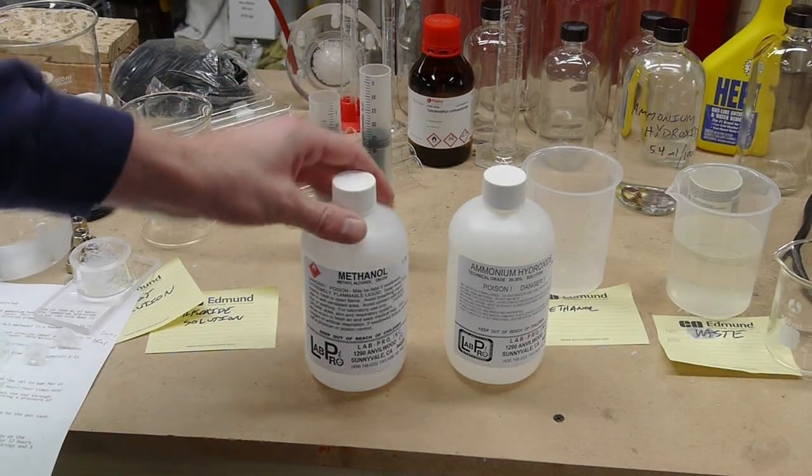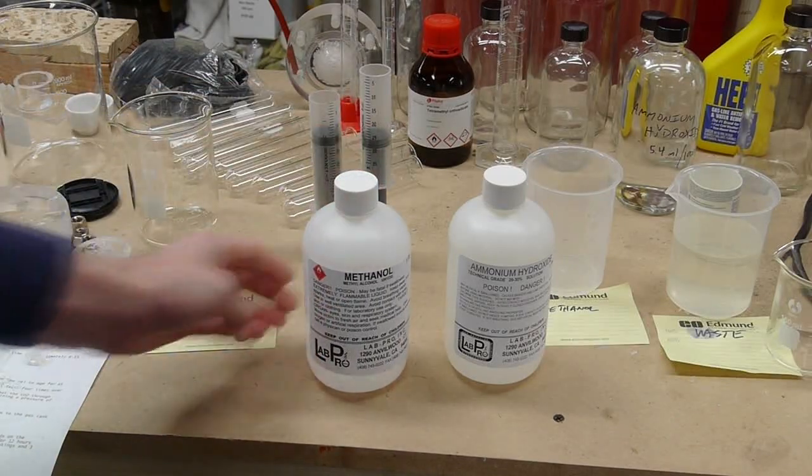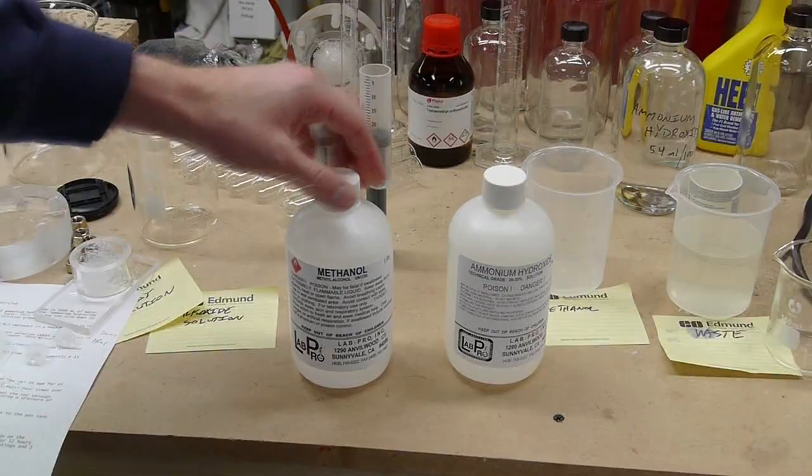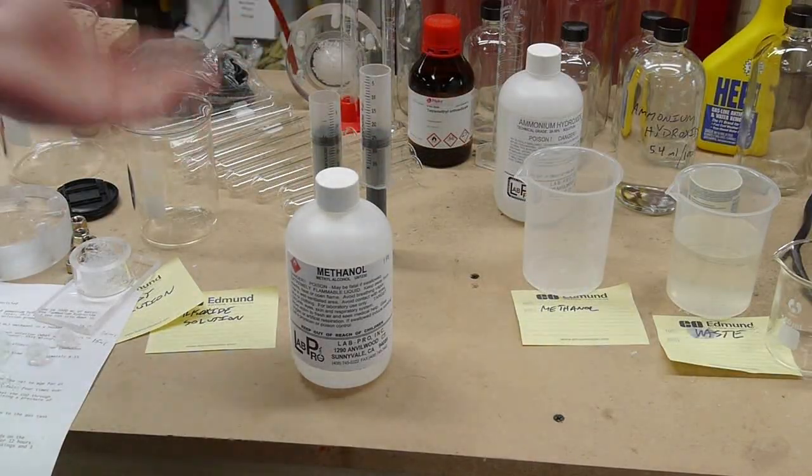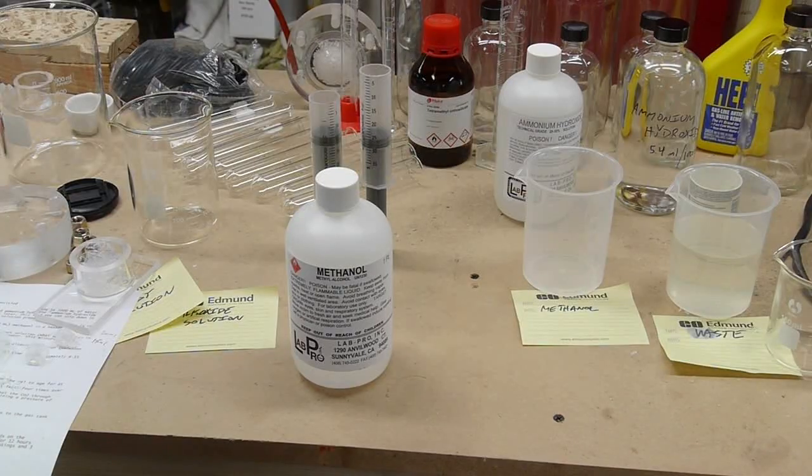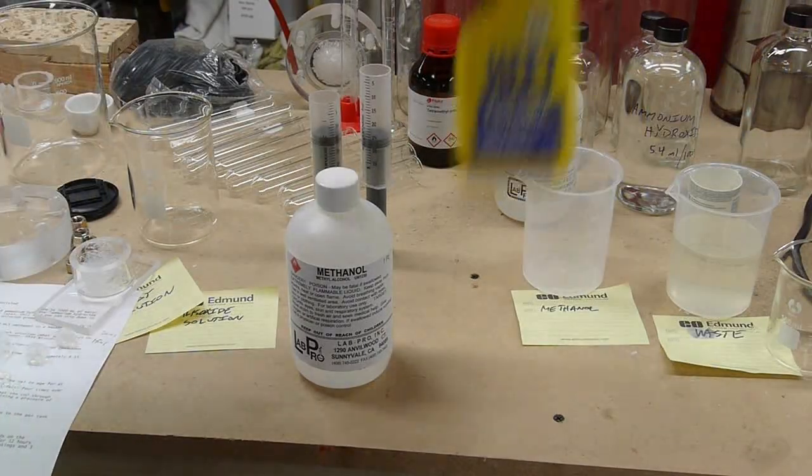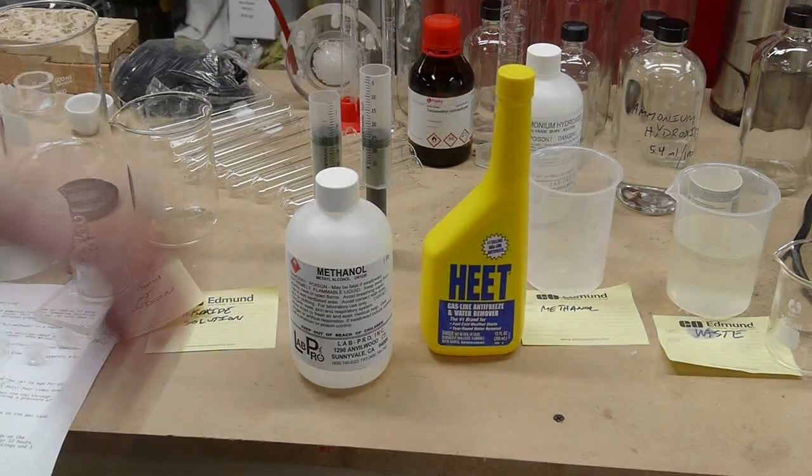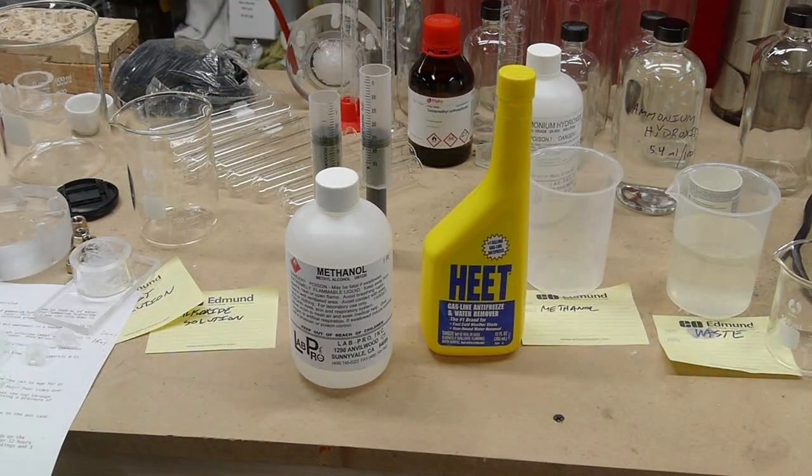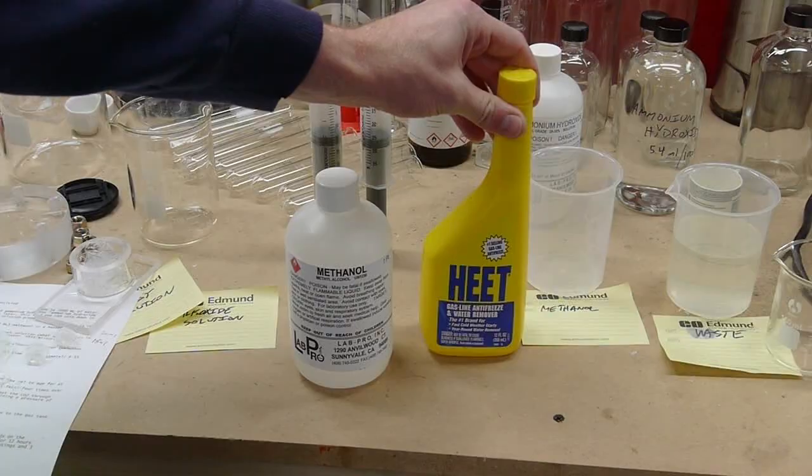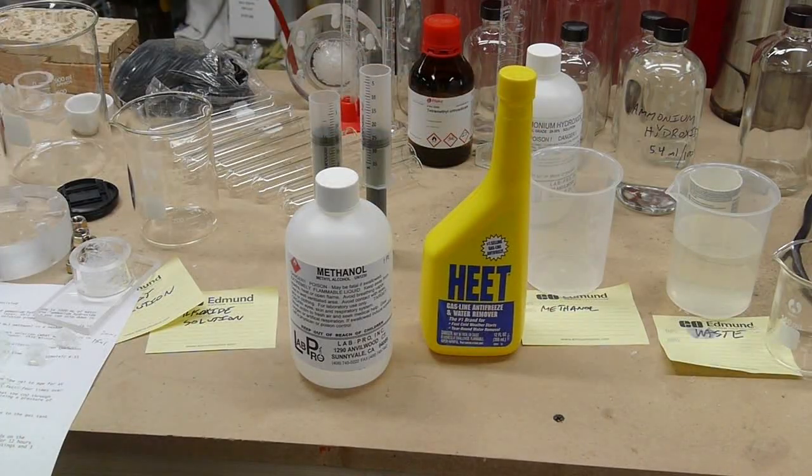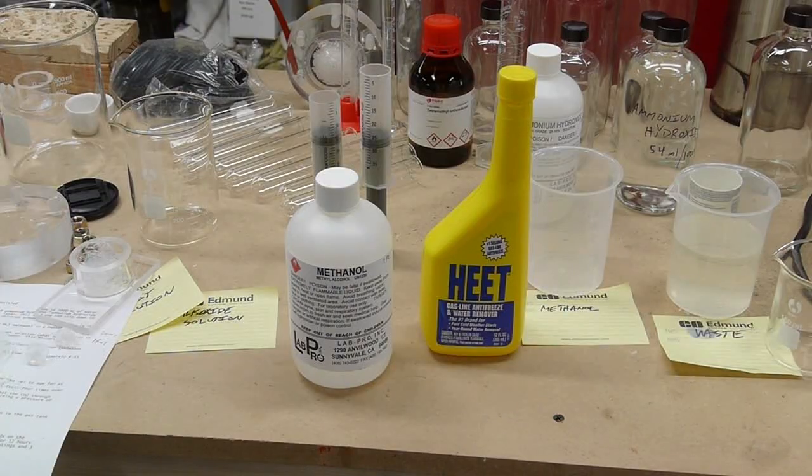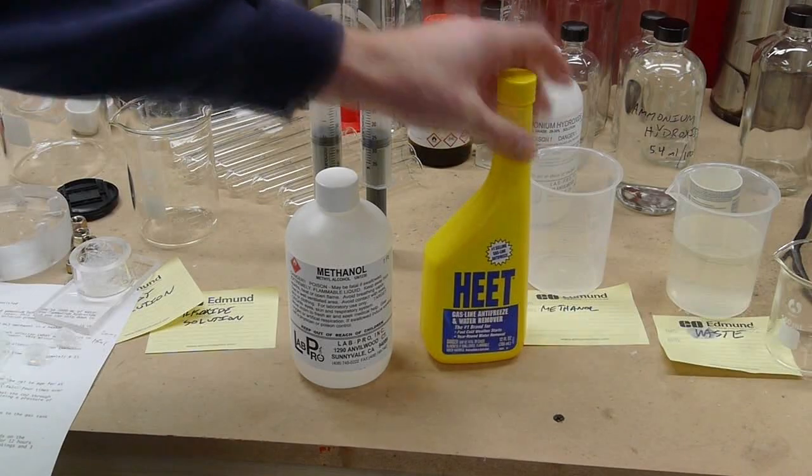I bought some technical grade methanol also from LabPro, but started to run low on it. And since you need, you end up needing quite a bit of methanol to make aerogel since you're constantly changing the solvent. So a cheaper source of methanol is this HEET gas line antifreeze. This is more or less pure methanol. I think there's a couple of ingredients that they aren't telling us about. If you read the back, it says there's some other kind of additive, but it's very almost pure methanol. And so I use this for a lot of the solvent exchanges.